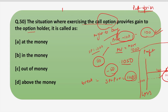Coming back to the question: what is that situation called where exercising the call option provides gain to the option holder? The option holder gains only when the market price is more than the strike price. So this situation is known as in the money. At the money means when the market price equals the strike price, and out of the money means when market price is less than the strike price. So our answer is in the money. I hope that you have understood this concept well as it is one of the very important and interesting topics in finance. If you have any doubt regarding any concept, do comment and ask your query. If you haven't subscribed to our channel yet, then do subscribe for more regular updates. Thank you for watching the video.